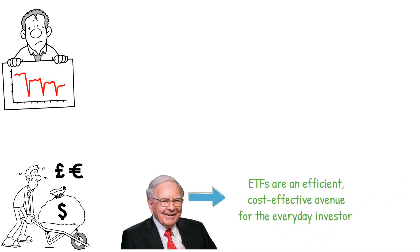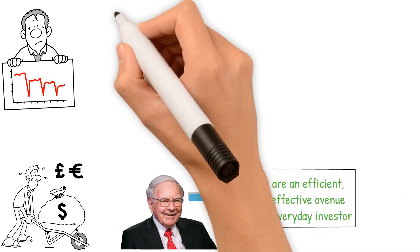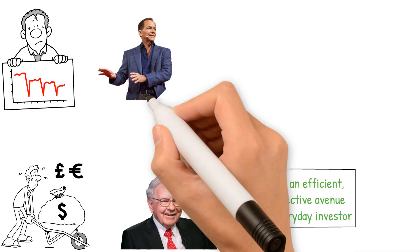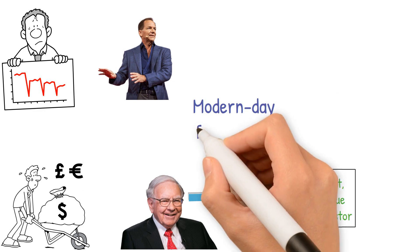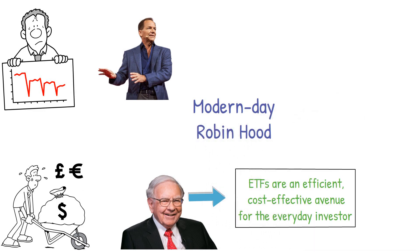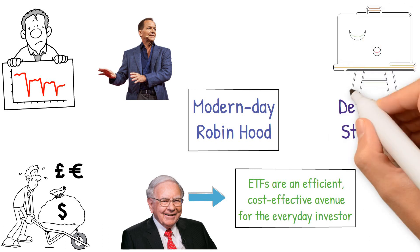Paul Tudor Jones stands out not just for his impeccable 28-year record without losses, but also for his philanthropy. Dubbed the modern-day Robin Hood, he underscores the significance of a defensive strategy for portfolios over aggressive ones.